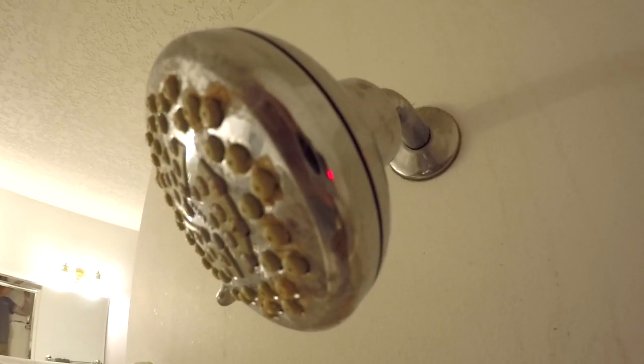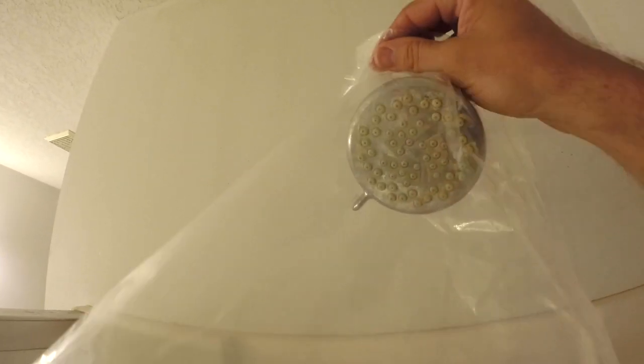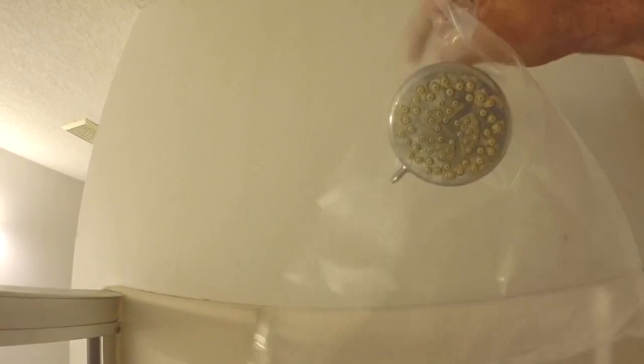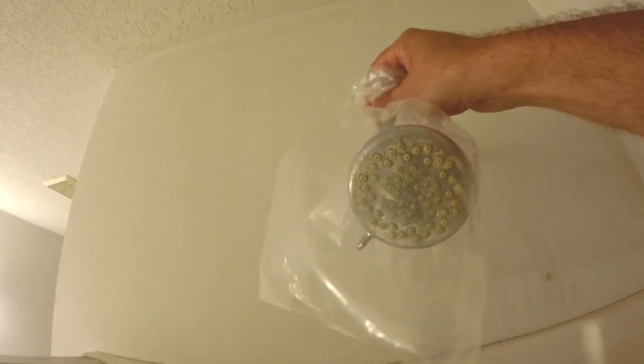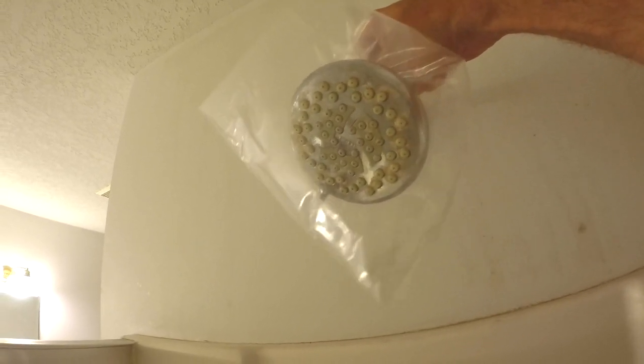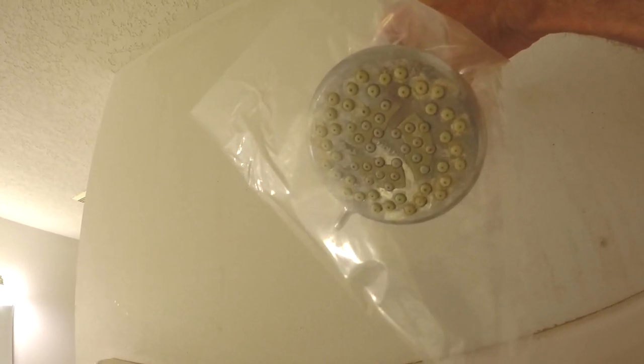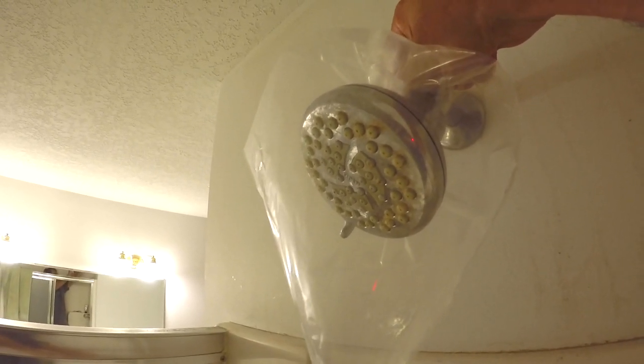Another option if you'd rather not take the shower head off the shower arm is to take a plastic bag and fill that. This is a twist tie gallon bag and you can tie this to the top of the shower arm and fill that bag with white vinegar and then let it soak like that overnight.